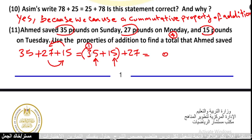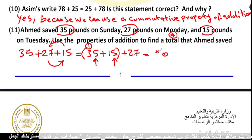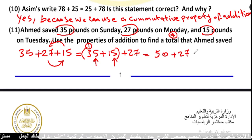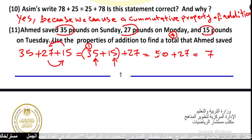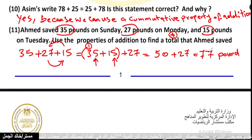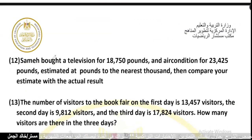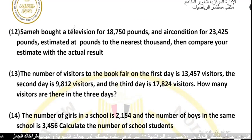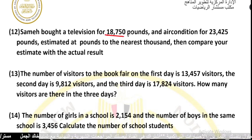Then we associate 35 with 15: 5 plus 5 equals 10, so 35 plus 15 equals 50. Then 50 plus 27: 7 plus 0 equals 7, 5 plus 2 equals 7. The total is 77 pounds.